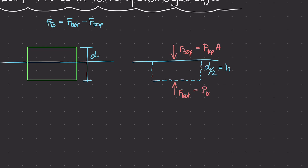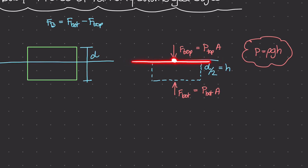At the bottom, it's going to be pressure of the bottom times area. Remember, pressure is equal to rho times g times h, where h is simply the distance from the surface line down to the point that we're studying. For F top, P top is going to be 0. Why? Because that distance is 0 — the surface is right here, and the point that we're studying is along that surface, so the distance between those two things is 0. If this pressure is 0, then F top is 0.